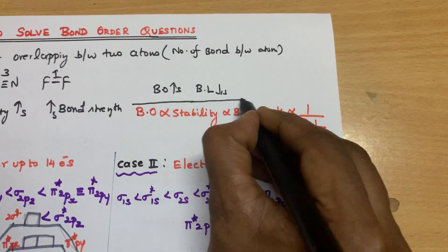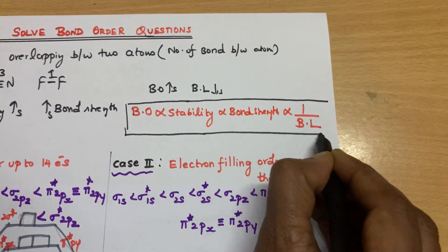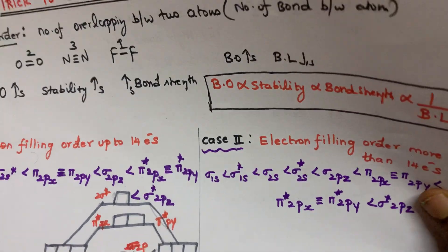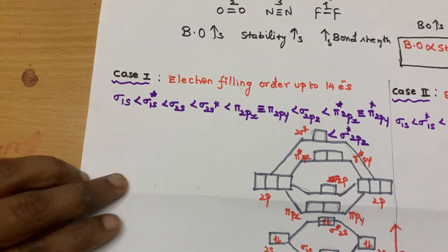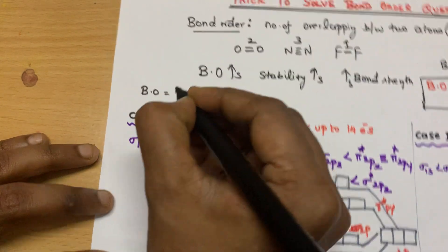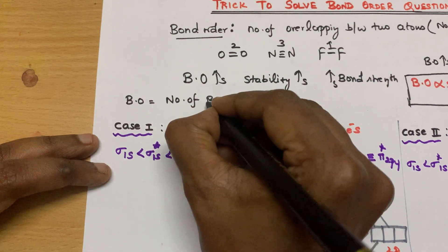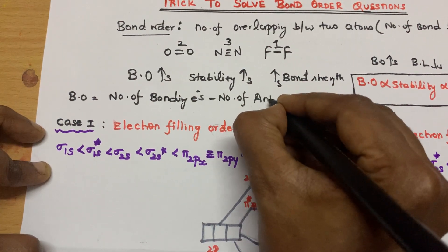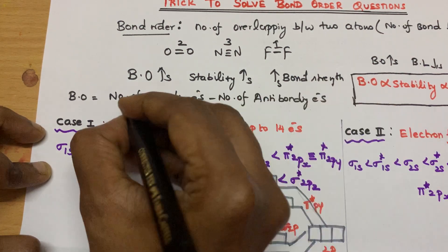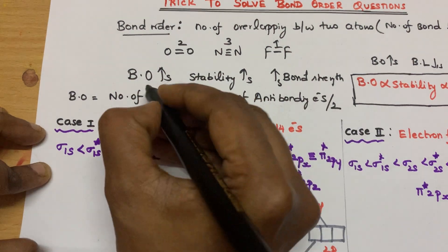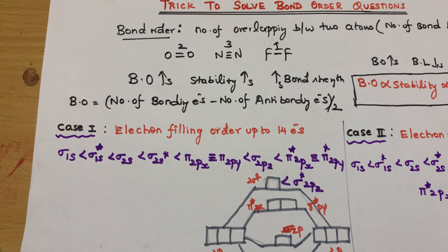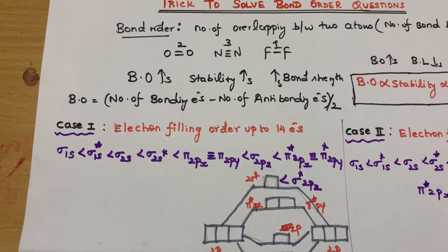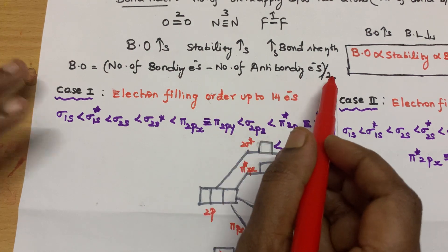Based on this concept, you will be having questions. Let's see how to determine bond order. The formula we generally use: bond order equals the number of bonding electrons minus the number of anti-bonding electrons, divided by 2. But how do we know the number of bonding or anti-bonding electrons? I'll show you the trick.